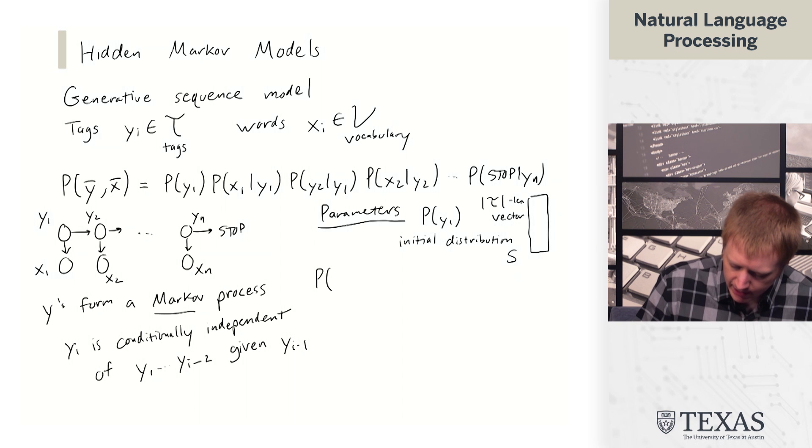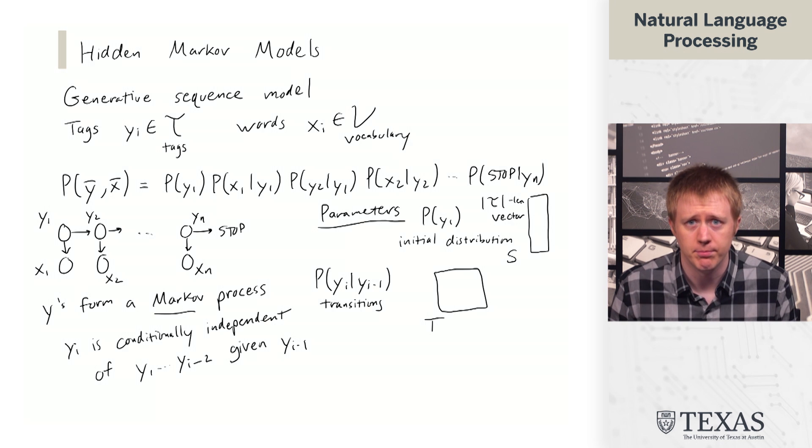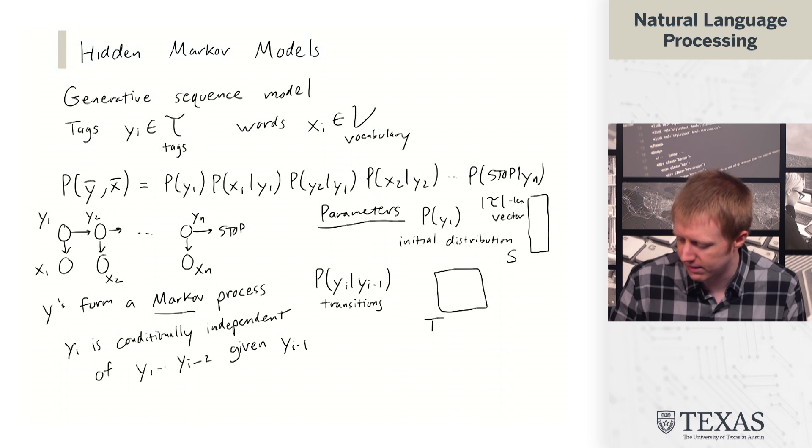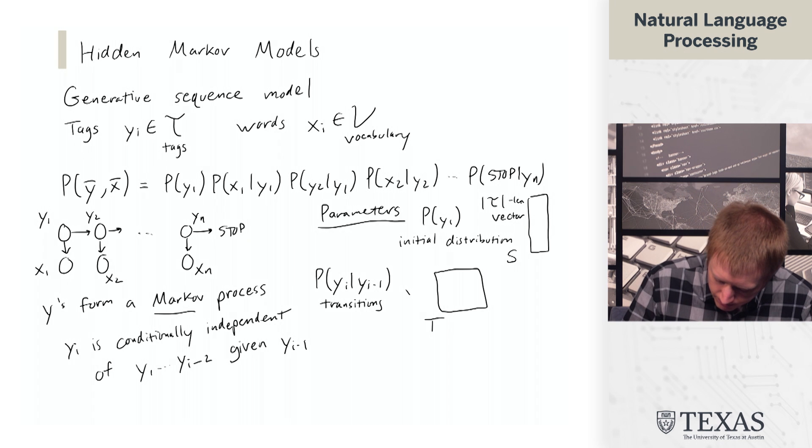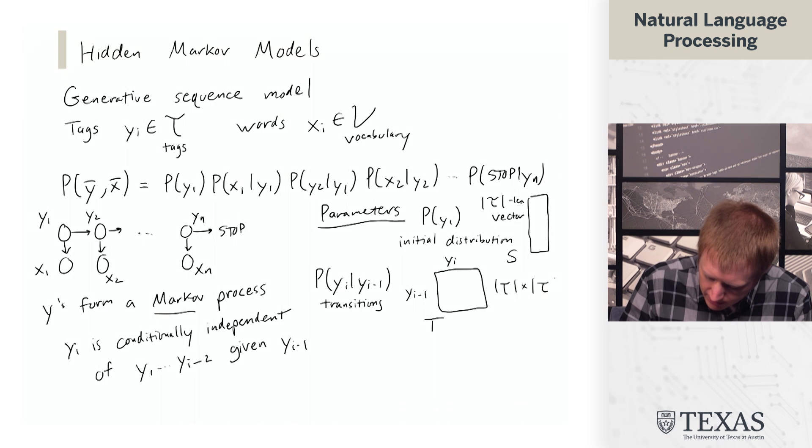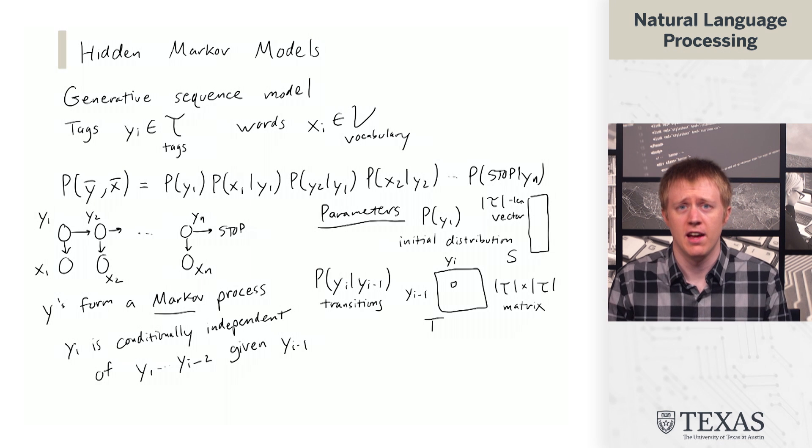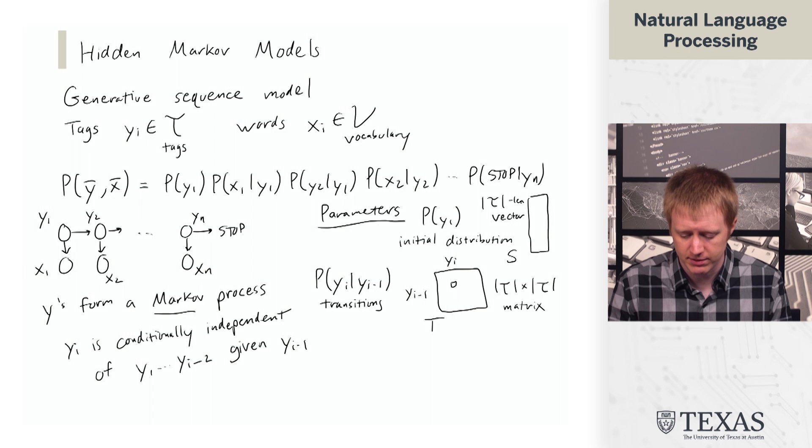So then we have these YI given YI minus one terms. These are called transitions. And so the way that's going to be represented is by T. So we're going to use the square T here for the transition matrix and the tau or squiggly T for the set of tags. And we could think of that as a T by T matrix here where essentially the value of a particular cell is telling us what is the probability of, let's say, tag.